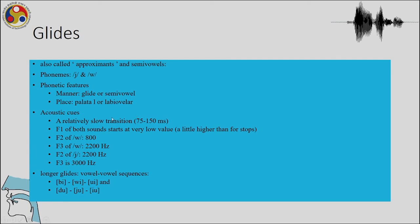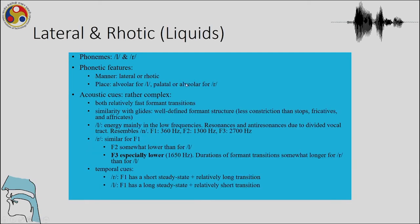For glides, there is a relatively slow transition of 75 to 100 milliseconds and F1 of both sounds starts very low. The important thing about glides is that this movement is quite apparent in the acoustics and is also a cue for perception. When it comes to the approximants /l/ and /r/, their acoustic cues are quite complex — both have very fast-moving formant transitions and a well-defined formant structure. F3 for /l/ is especially low, F1 is also low, and F1 has a long steady state with short transition for /l/.